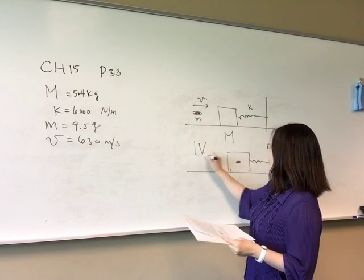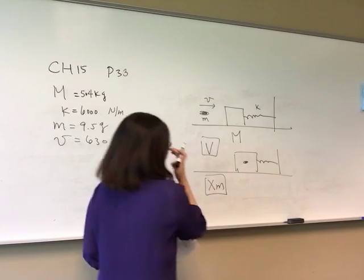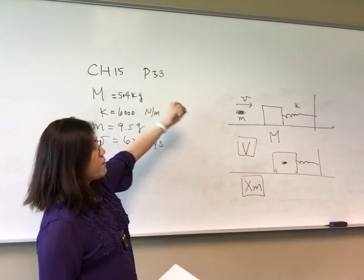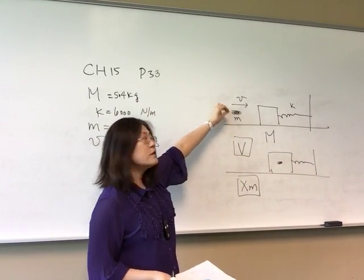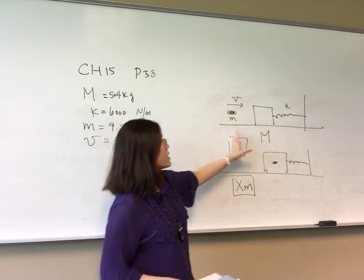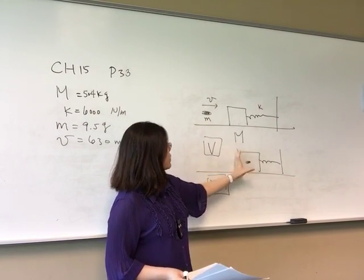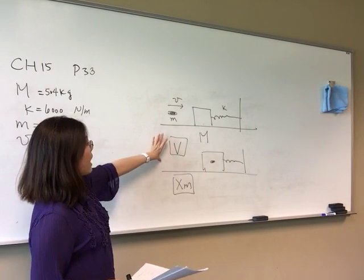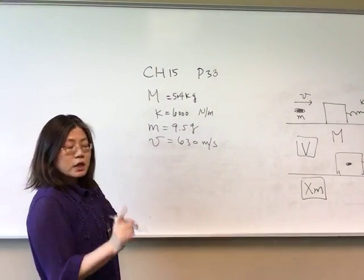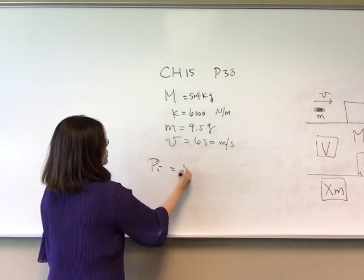We want to find velocity V after collision and amplitude xm. Since this is a completely inelastic collision, energy is not conserved during collision, but linear momentum is conserved. The initial momentum comes only from the bullet, since the block is initially at rest. So: m·v_bullet equals (m + M)·V.